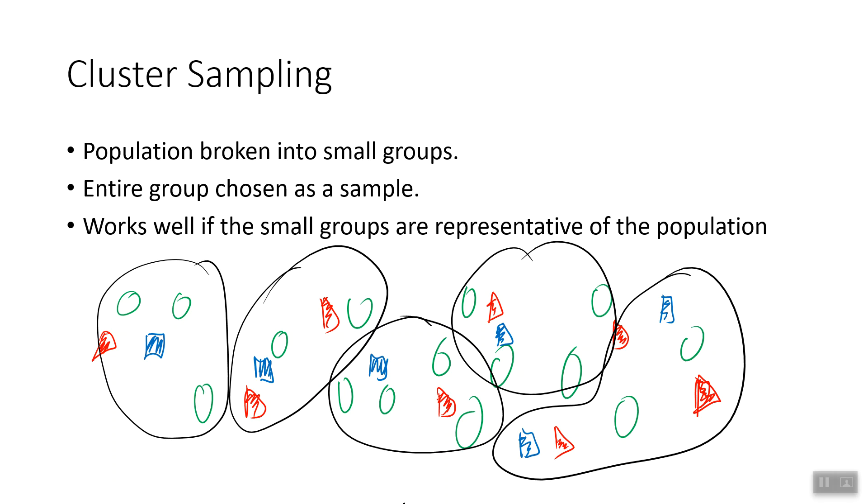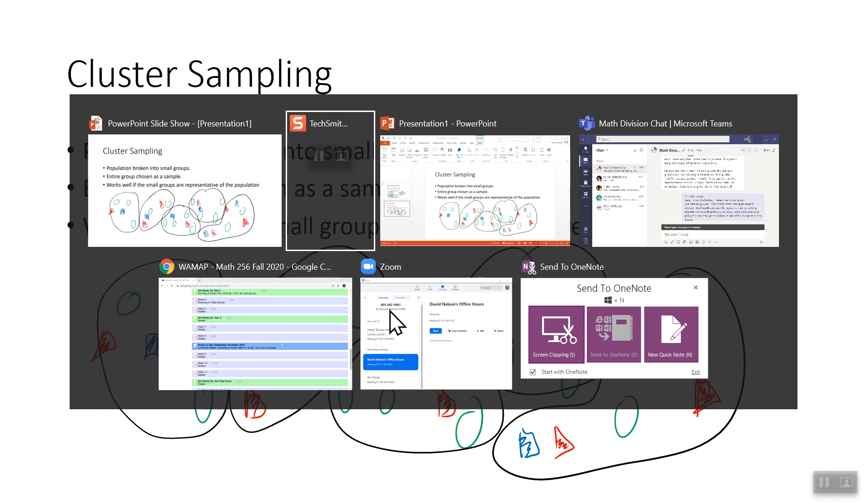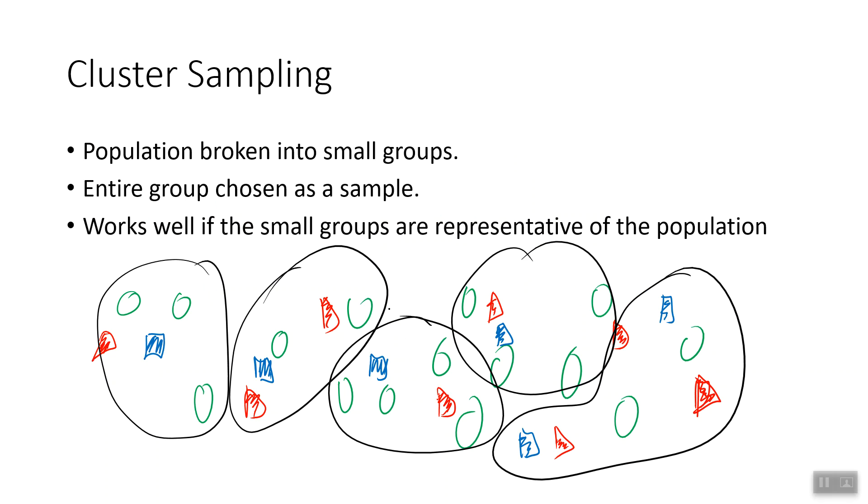I'm going to use my calculator to generate a number at random between one and five. Math probability rand integer one comma five, and it gave me number five. So I'm going to call this, this looks like the fifth group. That's how I number them. So this would become my sample.